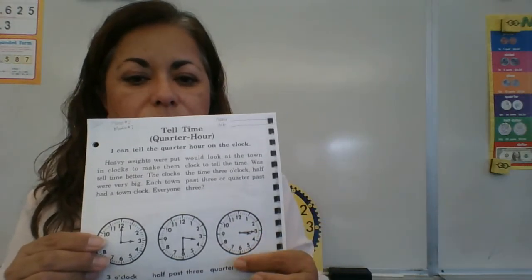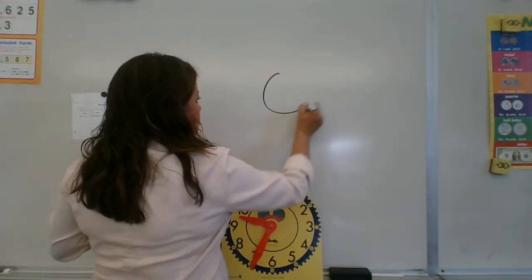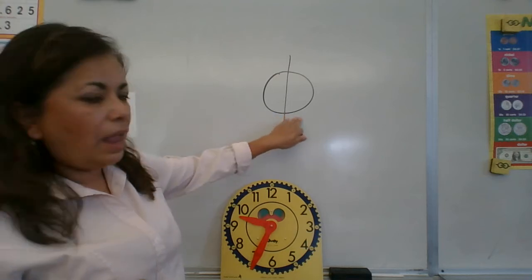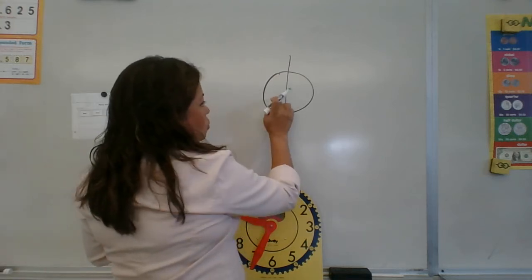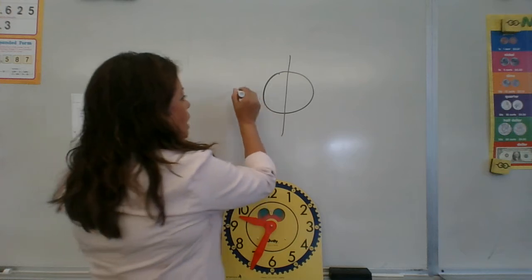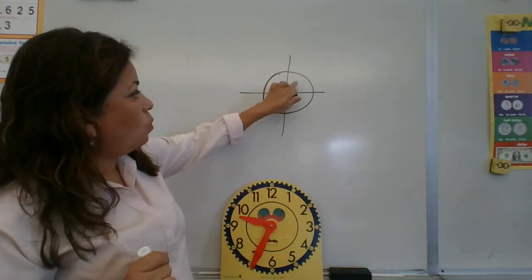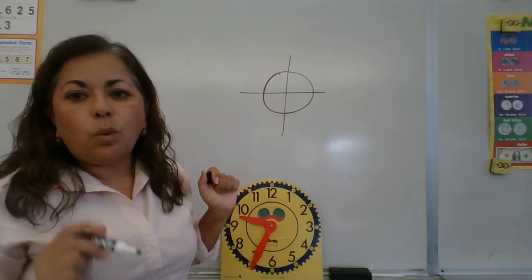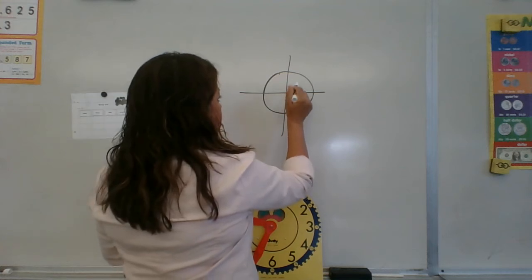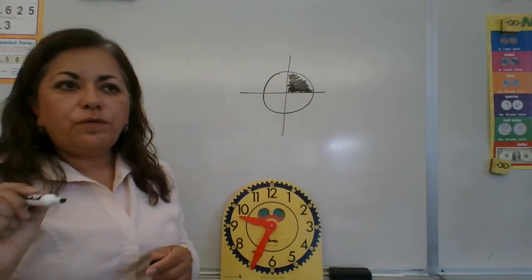When the big hand that was straight up moves only halfway past the half past — which is to the three instead of to the six — that's a quarter. Let me show you on the board. If I have a pizza and I divide it in half, that's half and half. But if I cut it in four, there are four pieces — one, two, three, four — and if I eat one, that's one out of four.